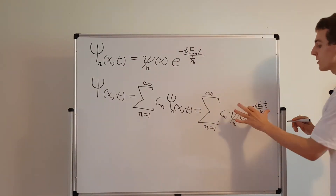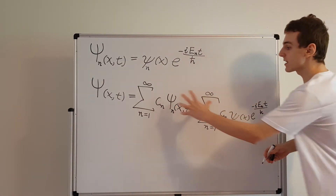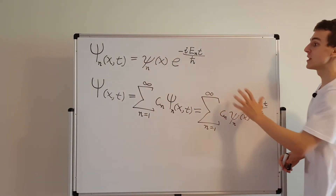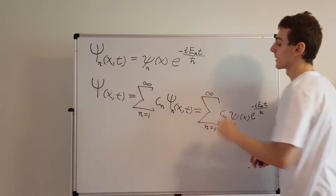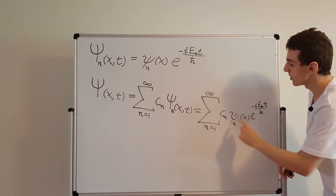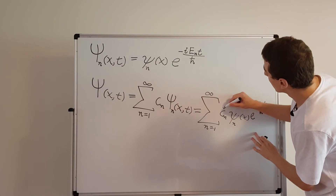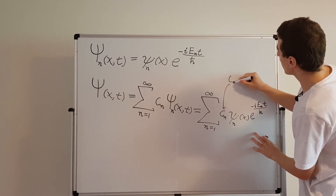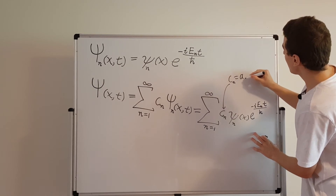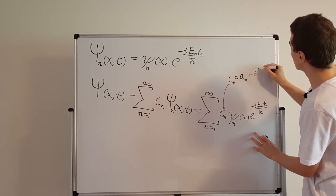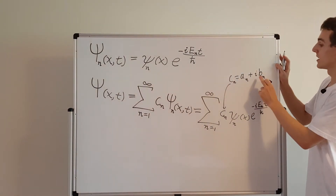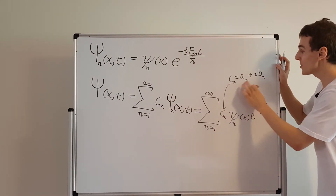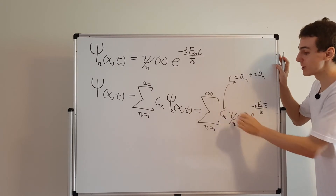Those are the separable solutions we found, and the constants c_n out the front can have a real component and an imaginary component. You can write c_n as a_n + i·b_n. This b_n could be zero, or a_n could be zero, or in fact both of them could be zero and the constant itself could be zero.